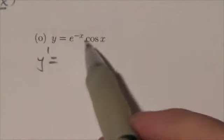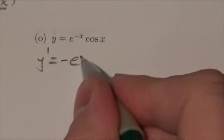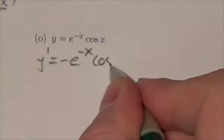So y-prime is going to be the derivative of e to the negative x. Well, that is the exponential function, so its derivative will be e to the negative x multiplied by negative 1, so negative e to the negative x times the cosine of x.